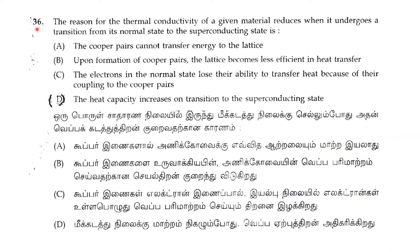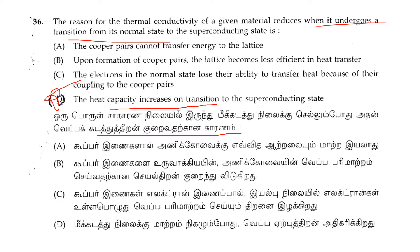Now we are discussing the 36th question: The reason for the thermal conductivity of a given material reducing when it undergoes a transition from its normal state to the superconducting state is that the heat capacity increases on transition to the superconducting state, leading to a reduction in thermal conductivity. Option D is the correct answer.